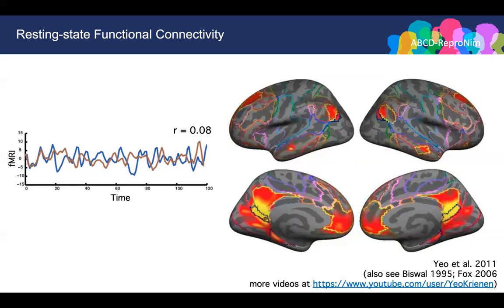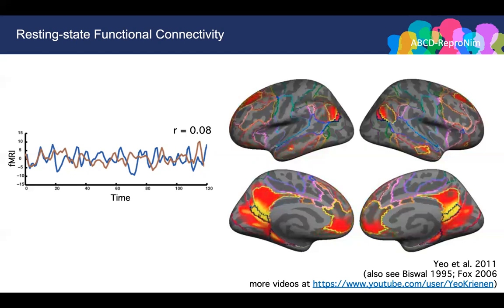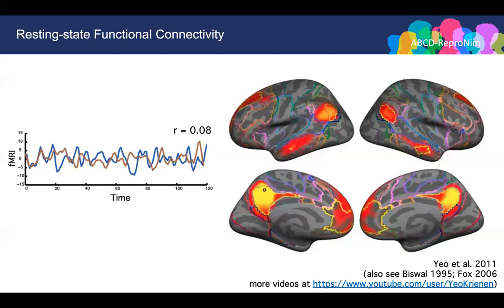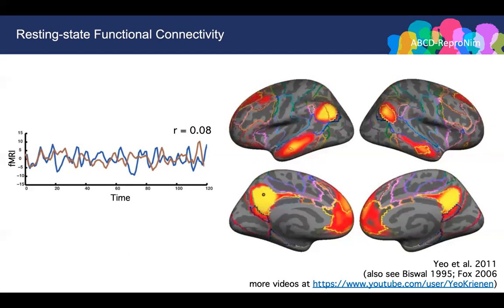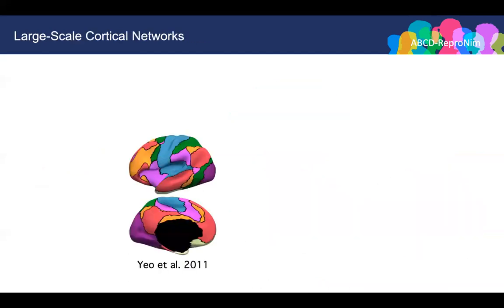If we move the seed region around the brain, we see that the correlation pattern changes a lot, suggesting that adjacent brain regions can have very different connectivity patterns. This has motivated many studies to extract brain networks using functional connectivity. Therefore, resting-state functional MRI is a powerful tool for exploring large-scale networks in the human brain.